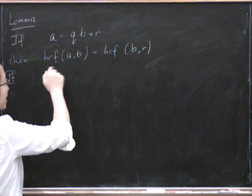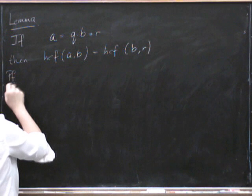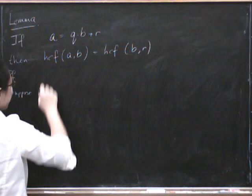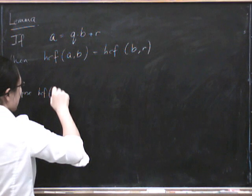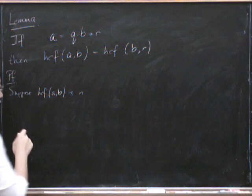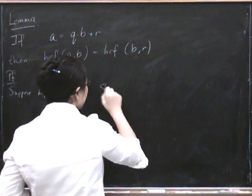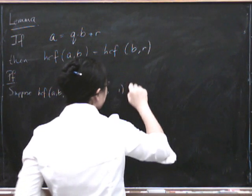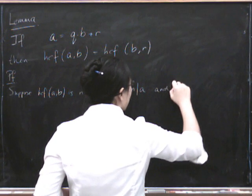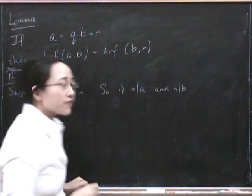So let's say that this is N. So suppose the highest common factor of A and B is N. So let's just remind ourselves what that means. So, one,